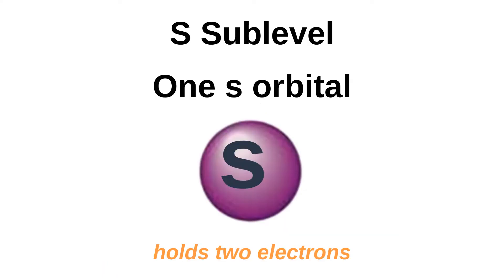The S orbital is a sphere shape and is found around the nucleus. The first shell only has one sublevel — the S sublevel — containing the S orbital. That is why it can hold a maximum of two electrons only.